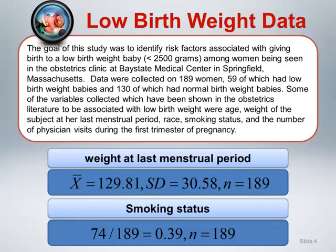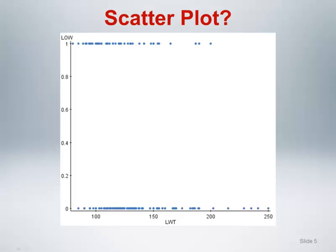In general, the independent variable can be continuous, ordinal, categorical, or binary. Later in this module, we will discuss multiple logistic regression where the model contains more than one independent variable. Looking at weight and low birth weight, let's proceed as we would with simple linear regression. We first create a scatterplot diagram with the dependent variable low birth weight, yes-no, on the vertical axis and the independent variable weight on the horizontal axis. The scatterplot is not very helpful. The dependent variable can only take on two values: zero indicating normal birth weight and one indicating low birth weight. It's clear that we cannot model a simple linear relationship in this context as we could with simple linear regression where we had two continuous variables.